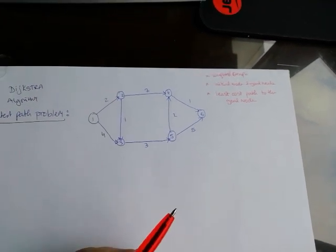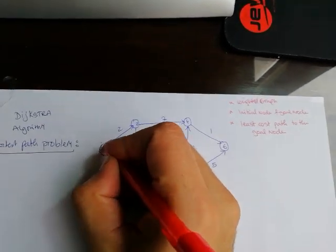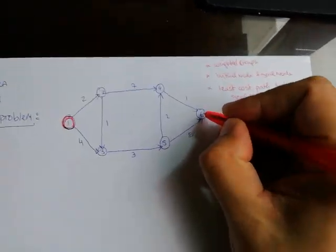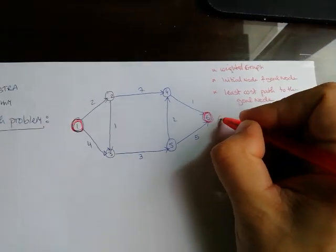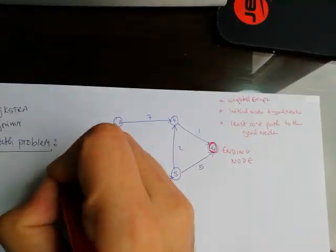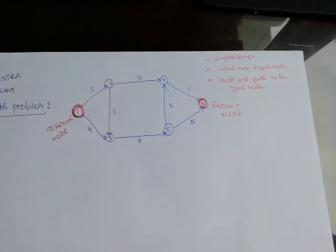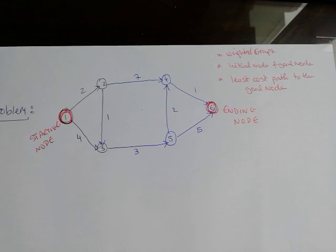Dijkstra's algorithm shortest path problem works as follows: first, we have to define the starting and the ending node. So this is the ending node and this is the starting node.